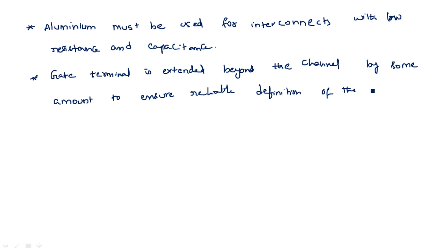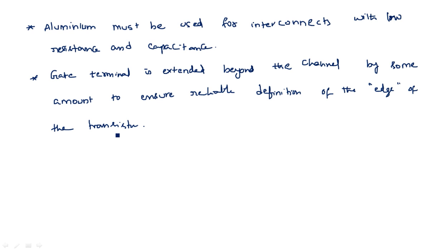The gate terminal is extended beyond the channel by some amount to ensure reliable definition of the edge of the transistor, because we have to consider fringing fields. In capacitance calculation, fringing field is the capacitance that exists at the edge of every layer, and this must be considered for accurate measurement of wiring capacitance. That is why the gate terminal is extended to the edge so that the edge capacitance or fringing field capacitance can be calculated.